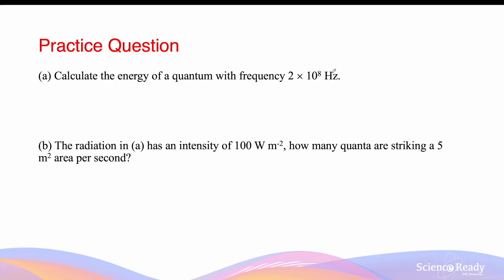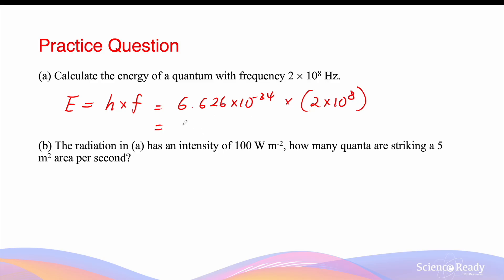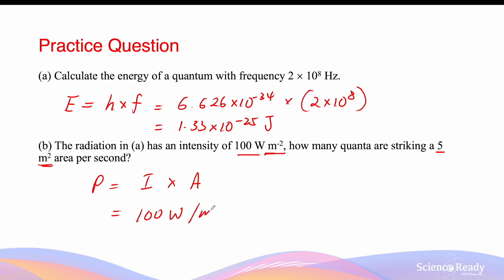Worked example: Calculate the energy of one quantum with a frequency of 2 × 10⁸ Hz. From quantum theory, the energy of one quantum is E = hf = 6.626 × 10⁻³⁴ × 2 × 10⁸ ≈ 1.33 × 10⁻²⁵ joules. For part b, this radiation has an intensity of 100 W/m². The power striking a 5 m² area is: P = intensity × area = 100 × 5 = 500 watts, which equals 500 joules per second.